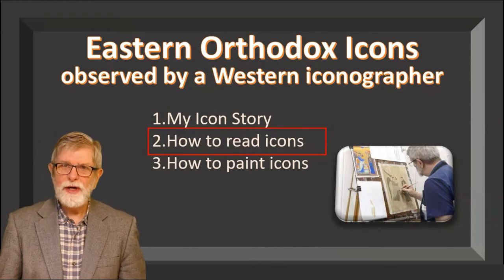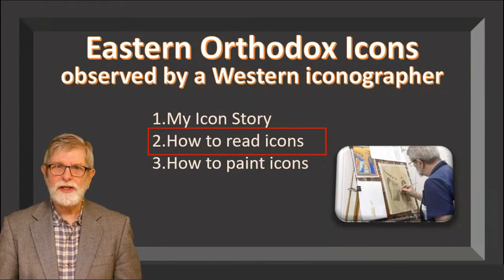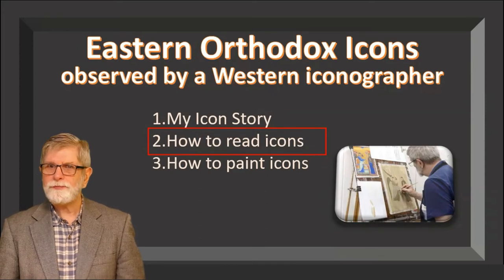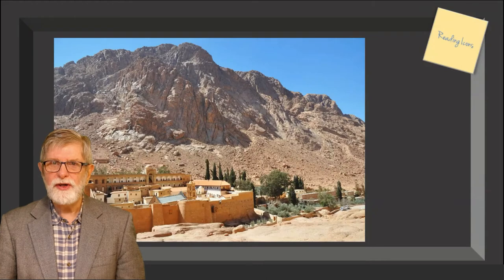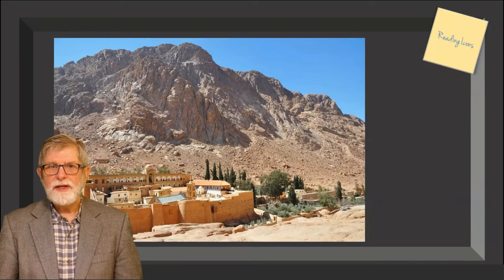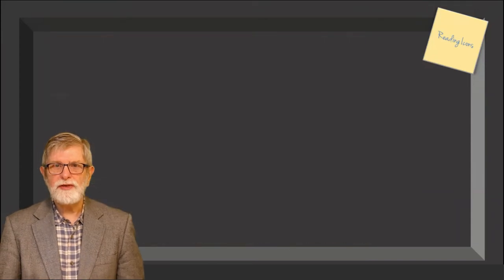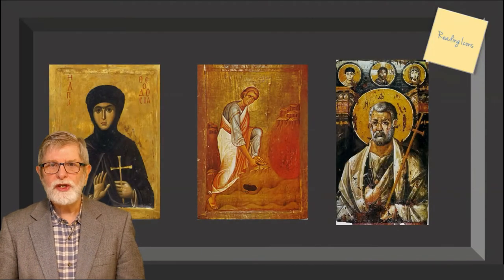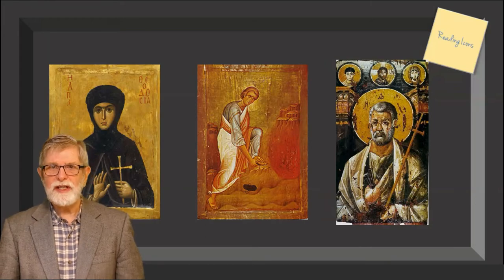Images we now recognize as belonging to the tradition of icons were evident in the early centuries of the church. Catacombs and grave art are among the early survivors. Perhaps the most notable icons from up to the first 600 years are in St. Catherine's Monastery on Mount Sinai. These icons are significant because they survived the mass destruction of icons when the church legislated that icons transgressed the commandment against images.